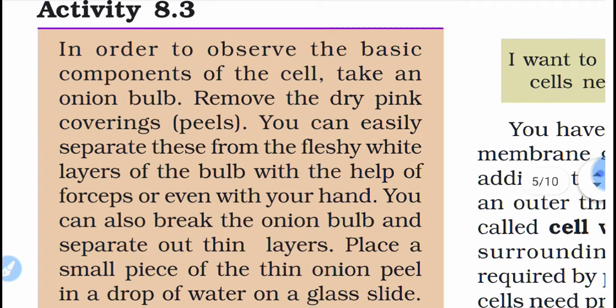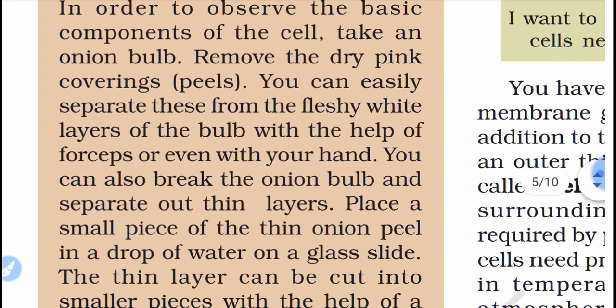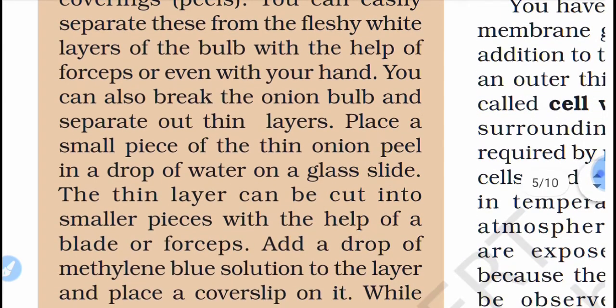In Activity 8.3, to observe the basic components of the cell, take an onion bulb and remove the dry pink coverings — that means peel the onion. You can easily separate these from the fleshy white layer of the bulb with the help of forceps or even with your hand. You can also break the onion bulb and separate out thin layers.